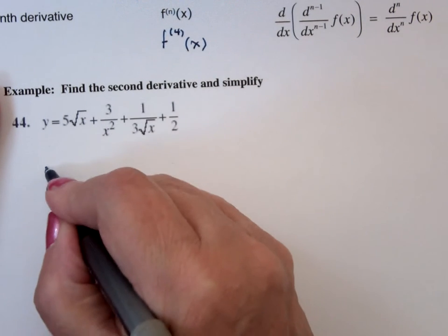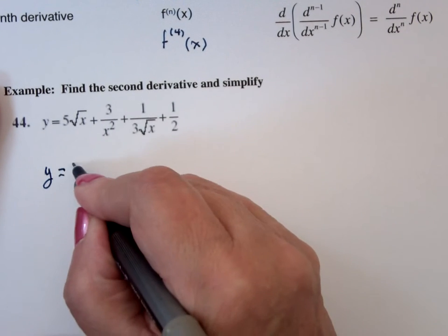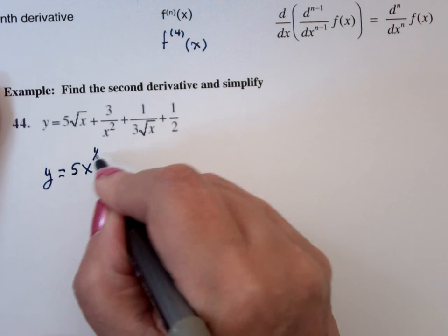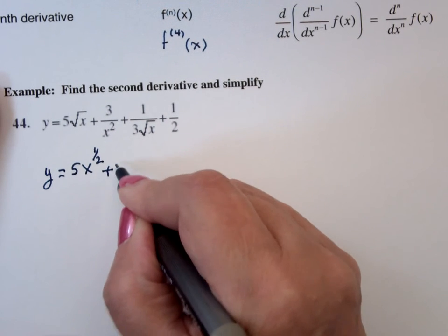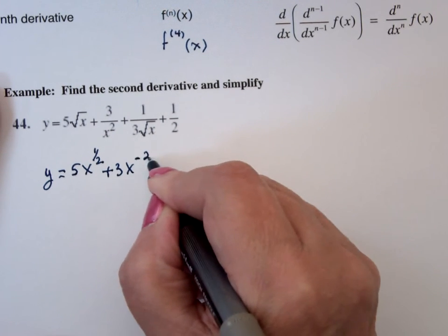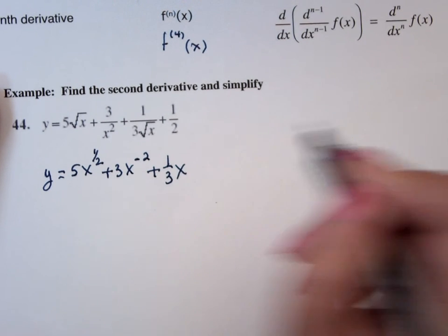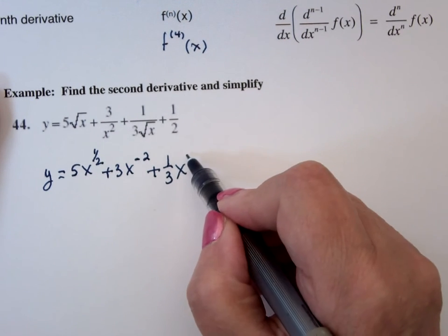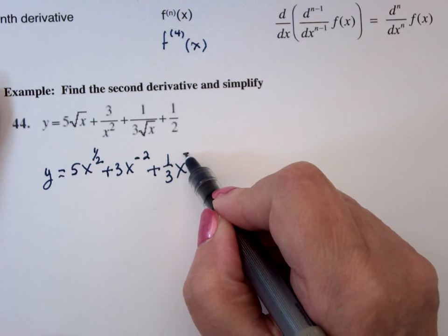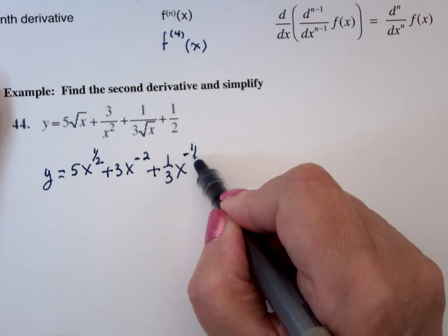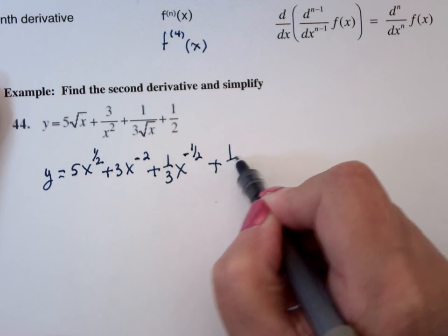Well, the first thing I always do is I'm going to rewrite this. This is 5x to the 1/2 power, plus 3x to the -2 power, plus 1/3 x to what power? Not 1/2. Negative 1/2, plus 1/2.